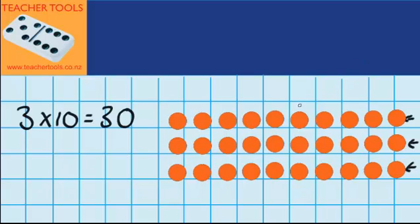Now I could also use my doubles to help me work out how many there are. If I put a line right down here I'm splitting this amount in half. So I've got 2 groups with the same amount of counters on each side. So I can see that there are 2 groups of 15. And I know that 15 plus 15 is 30.